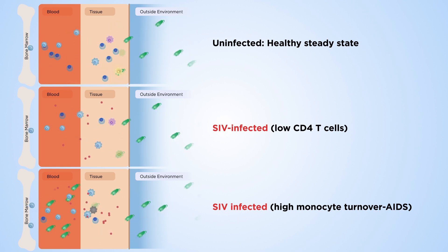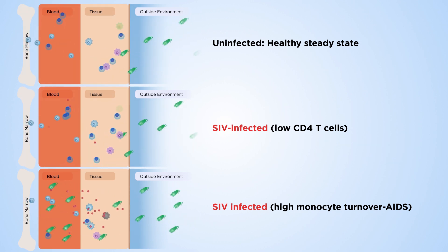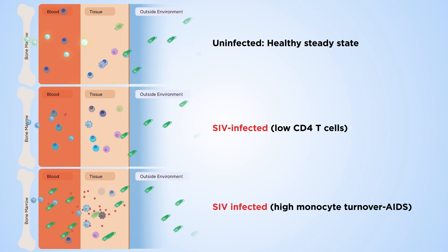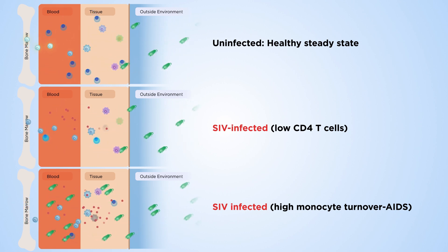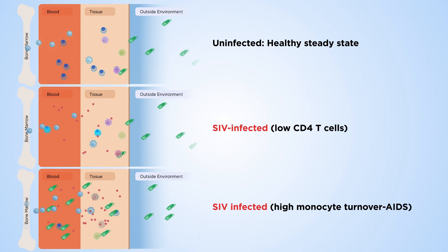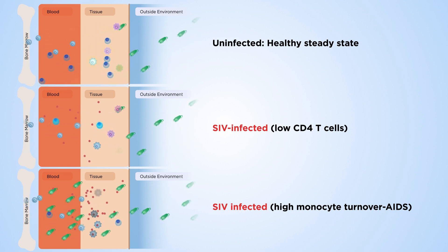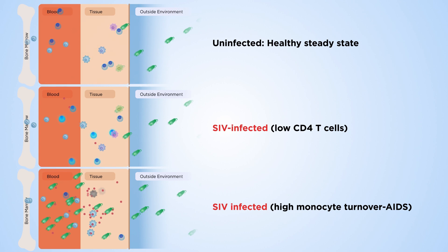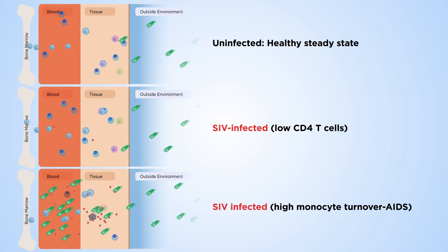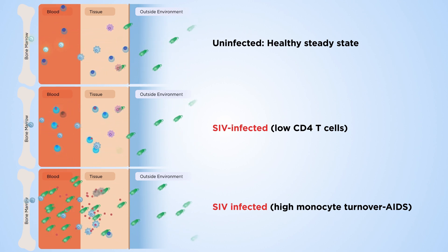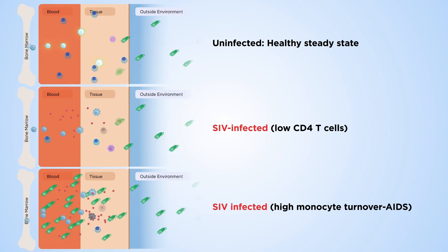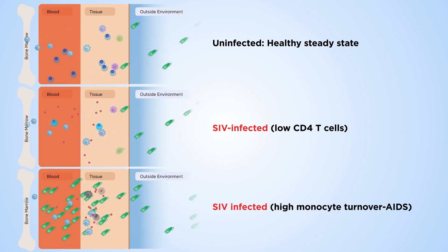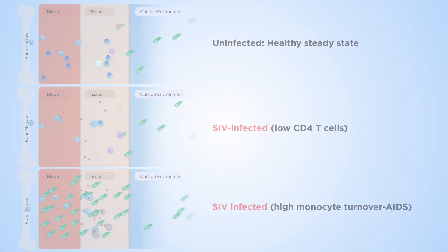We've shown that, as long as macrophages act as the first line of defence, opportunistic infections don't develop, despite low CD4 T-cell numbers. Since monocyte numbers remain level throughout HIV infection, increased monocyte turnover wasn't recognised until now. This shows that increased monocyte turnover consistently predicts the onset of AIDS.